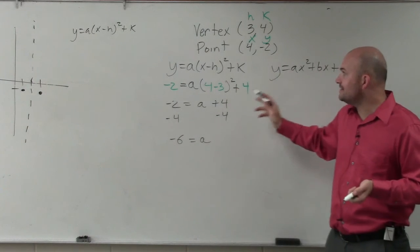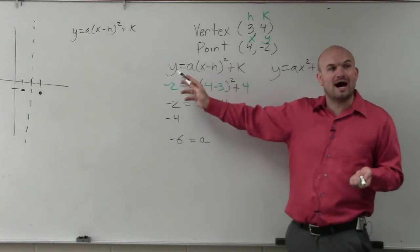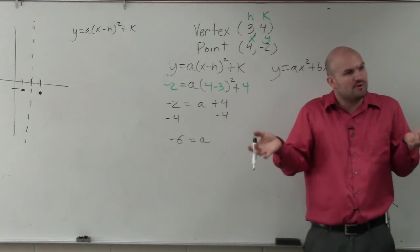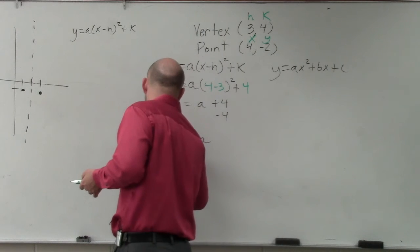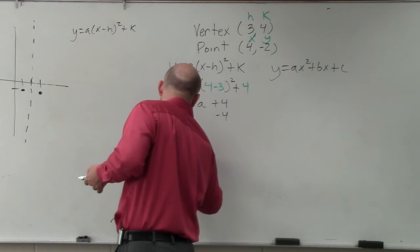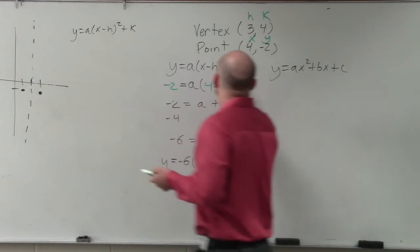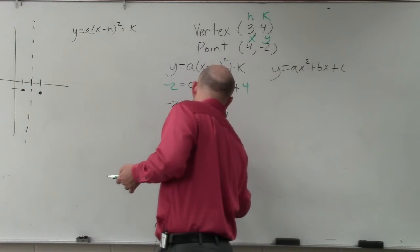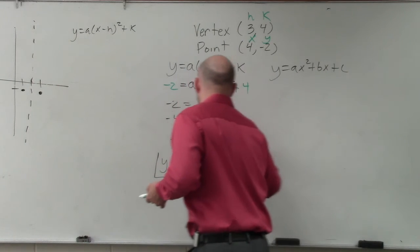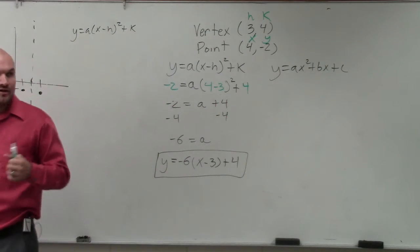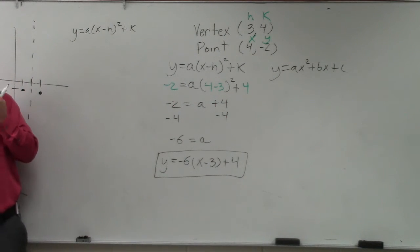So to rewrite this back in there, we want to keep the x and the y open because the equation represents infinitely many points that lie on the graph. So my equation in vertex form is y equals negative 6(x minus 3) squared plus 4. So that would be my equation in vertex form.